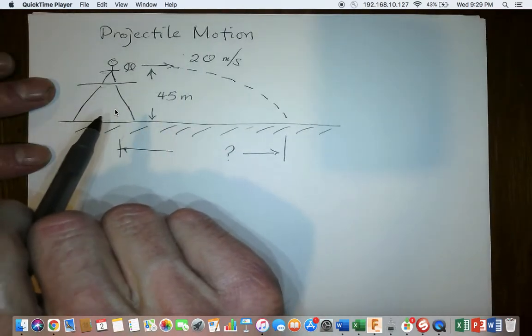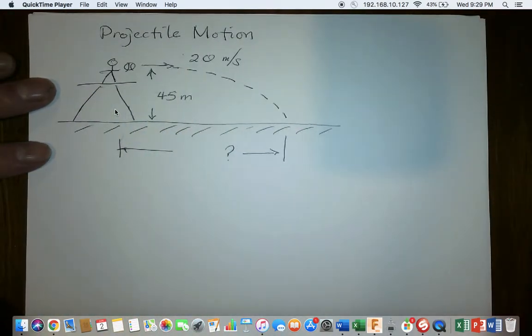Today we're going to analyze a problem involving projectile motion. A projectile is any object that is falling freely. It doesn't have to be thrown horizontally or shot at some angle. It simply has to fall freely.